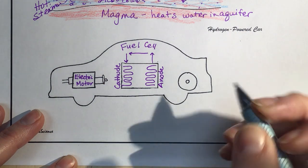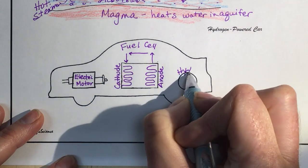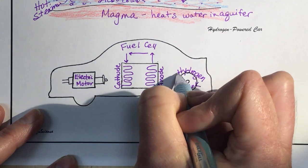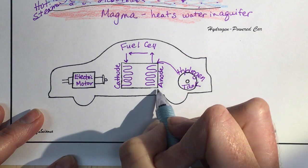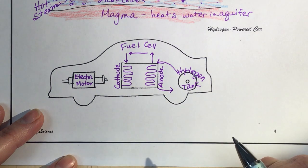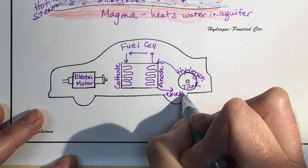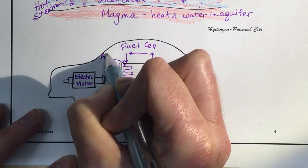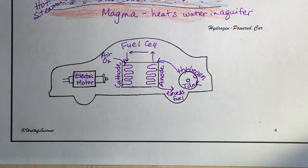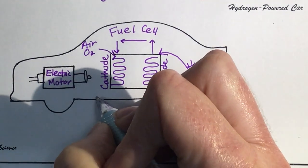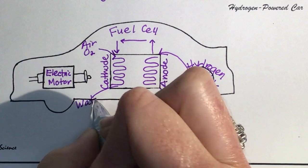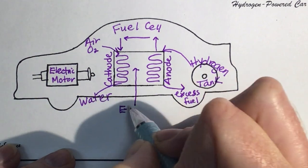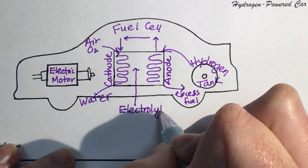So this would be a hydrogen tank. The hydrogen goes in here on the anode side. If we have any excess it can go back to the hydrogen tank. Then we need oxygen, so air comes in here on the cathode, and then it's going to release water. So our only byproduct of a hydrogen fuel cell is water. This part here is electrolyte. These are the basic parts of the fuel cell.